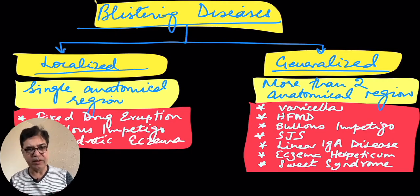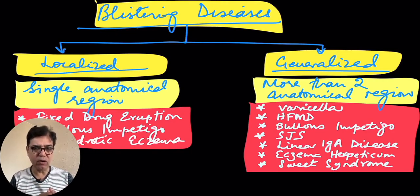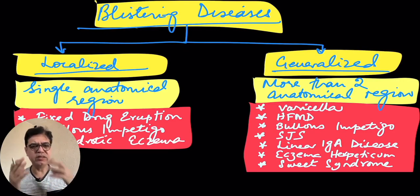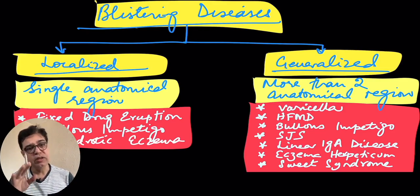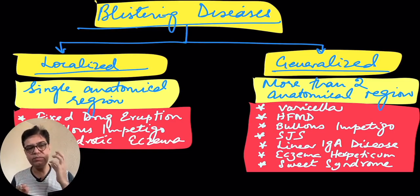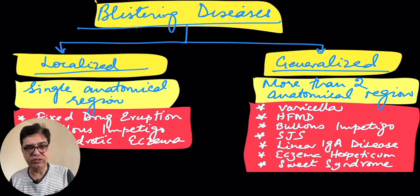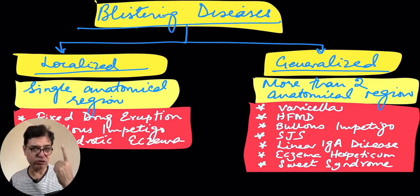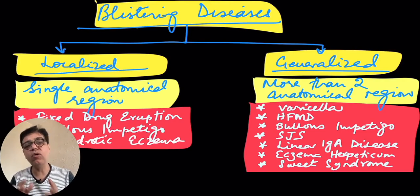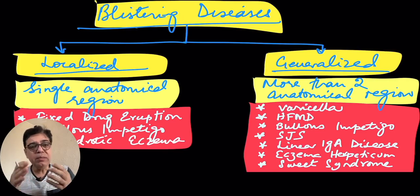Moving on to how we classify these blistering or vesicular diseases — it depends on whether the lesion is confined to one anatomical area or whether two or more anatomical areas are involved. If just one area is involved — say the back of the hand, the face, or the neck — we call it a localized blistering disease. If two or more anatomical regions are involved — say the face and both hands, or face, chest, abdomen, and limbs — we call it a generalized vesicular rash.